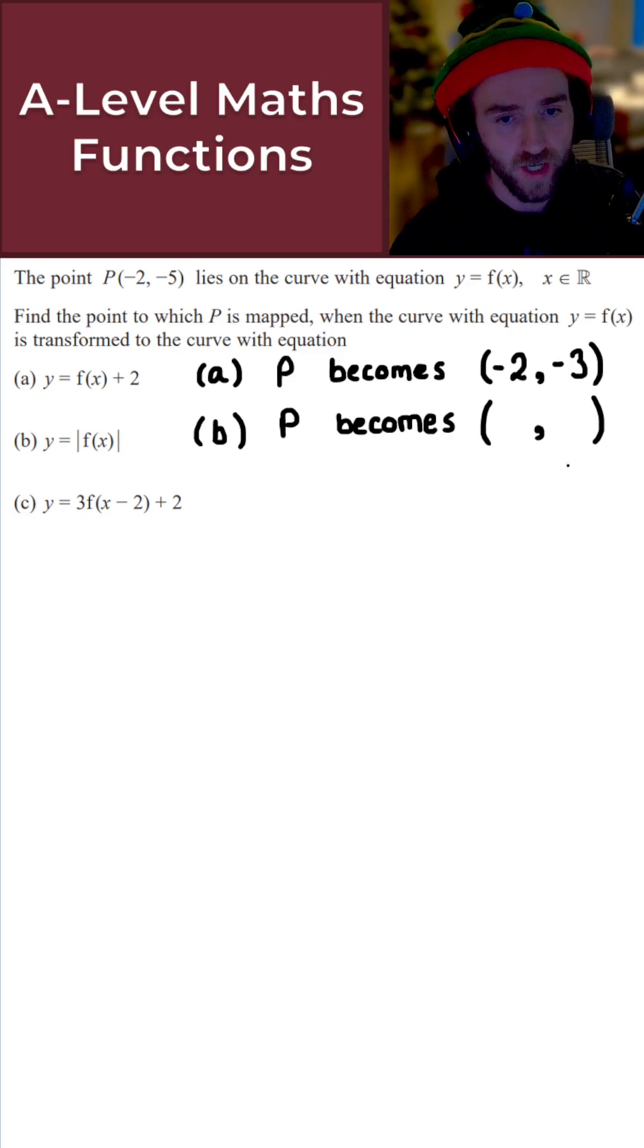Given that the y-coordinate here is -5, it's negative. That now just becomes positive and the x-coordinate doesn't change. So the x-coordinate is -2, and for the y-coordinate, it becomes positive 5 instead of -5. In that case, P becomes (-2, 5).